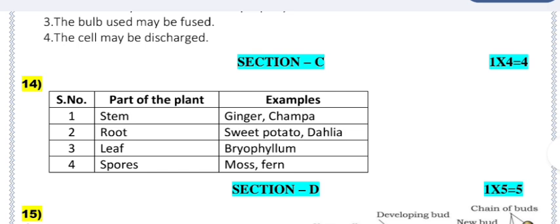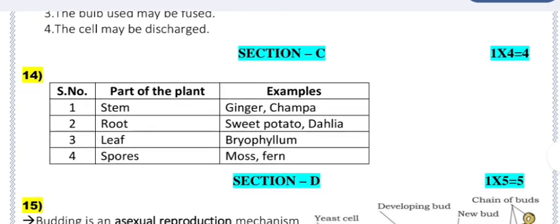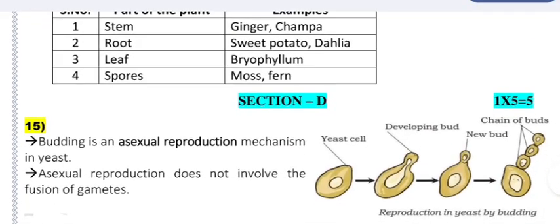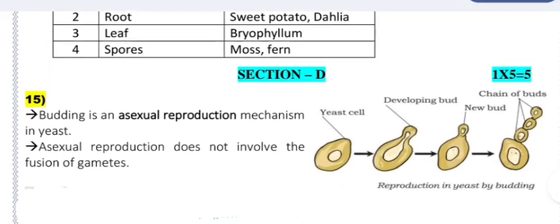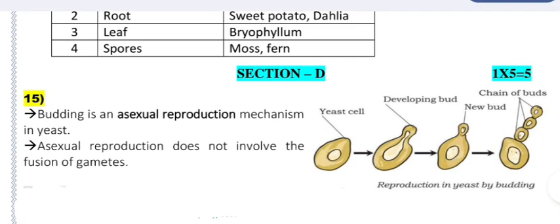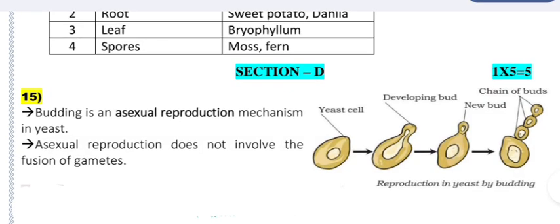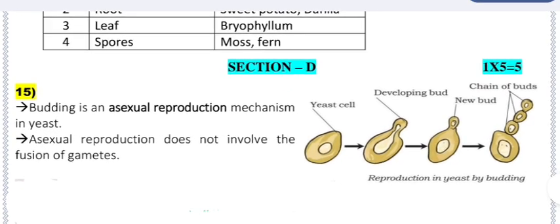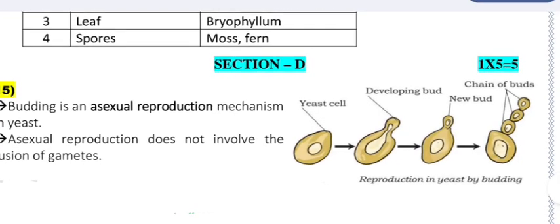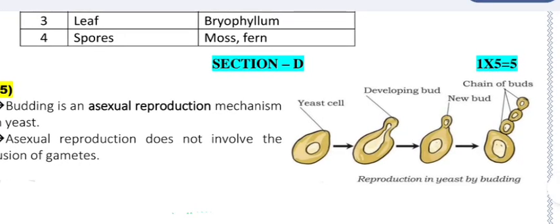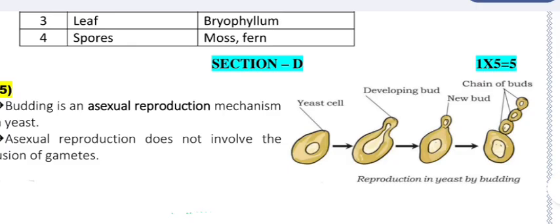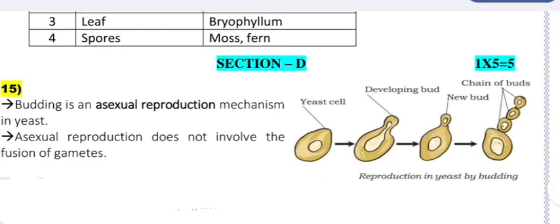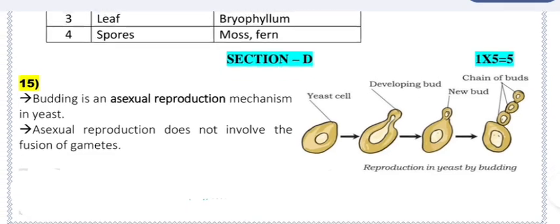Section C answers — Plant parts and examples: Stem: ginger and champa; Root: sweet potato and dahlia; Leaf: Bryophyllum; Spores: moss and fern. Section D, Question 15: Budding is an asexual reproduction mechanism in yeast. Asexual reproduction does not involve the fusion of gametes. Diagram shows yeast cell developing a bud, new bud forming, and a chain of buds — reproduction in yeast by budding.